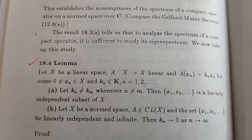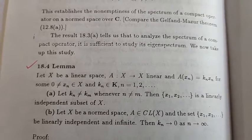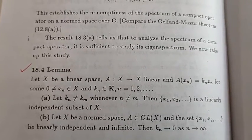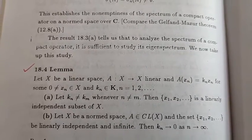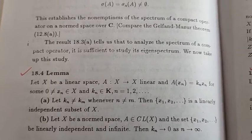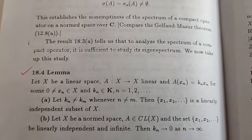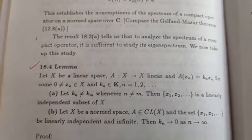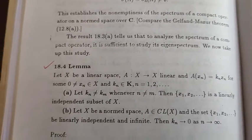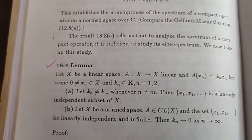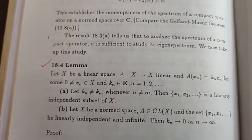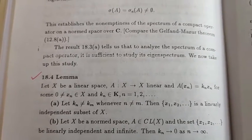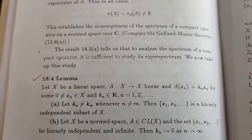Then, first part: let k_n not equal to k_m whenever n not equal to m. Then the set {x_1, x_2, ...} is a linearly independent subset of X.